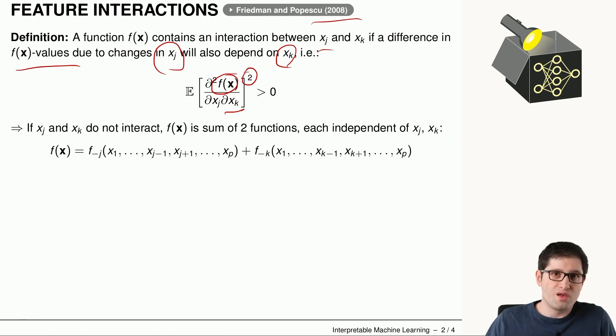If we would have value of zero here, this would mean that there is no interaction. And in case of no interaction, so if xj and xk do not interact with each other,